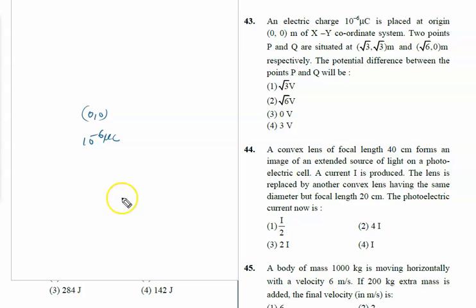Point P has coordinates (√3, √3) and point Q has coordinates (√6, 0). The question asks for the potential difference between points P and Q.